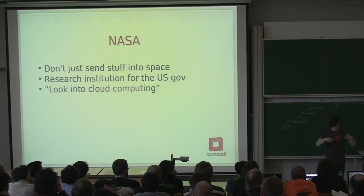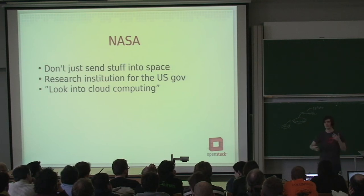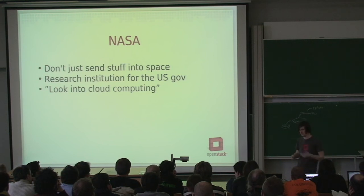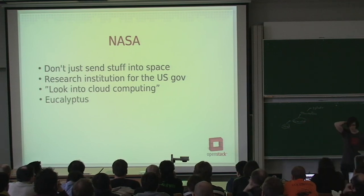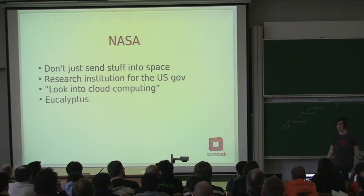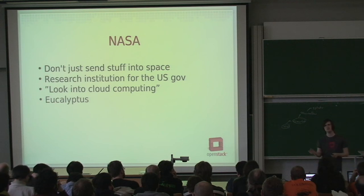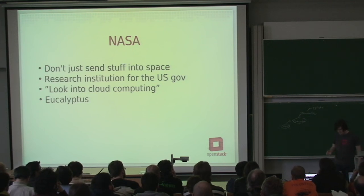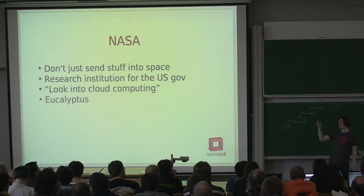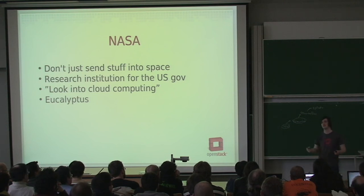The NASA guys decided to set up their own cloud to see what the challenges are, how to use it, and how to save money. They did that using something called Eucalyptus — a software project started at the University of California, Santa Barbara. Before anyone had really defined what cloud computing was, they agreed Amazon's approach was the standard. So they implemented Amazon EC2 for themselves, calling the result Eucalyptus. NASA used Eucalyptus to build what they called Nebula — their cloud infrastructure that comes in great big containers as a pool of resources.